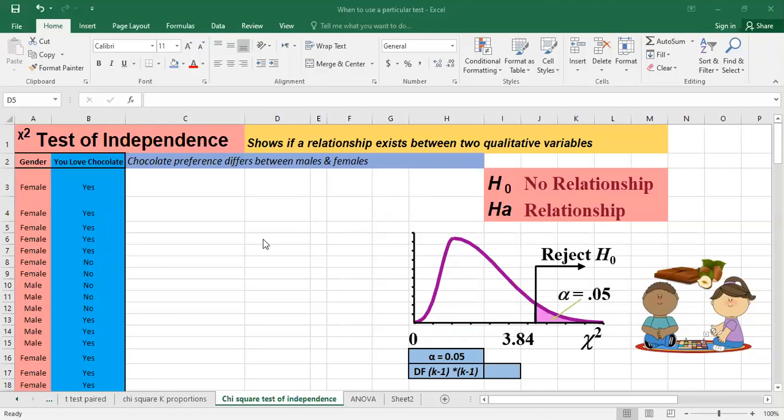So in order to illustrate it with an example, we're having here the raw data. We're having a question regarding gender and we're having another question if you love chocolate or not. So we want to see if chocolate preference differs between males and females.